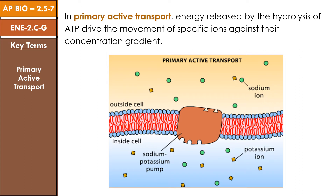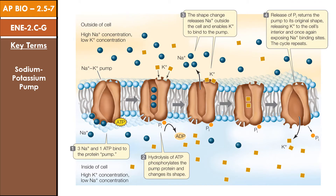In primary active transport, energy released by the hydrolysis of ATP drives the movement of specific ions against their concentration gradients. For example, the concentration of potassium ions inside a cell is often much higher than in the fluid bathing the cell, while the concentration of sodium ions is often much higher outside the cell. A protein in the cell membrane pumps sodium ions out and potassium ions in against these concentration gradients. This is called the sodium-potassium pump — an integral membrane glycoprotein found in all animal cells. It breaks down a molecule of ATP to ADP and a free phosphate ion, using the released energy to bring two potassium ions into the cell and export three sodium ions.